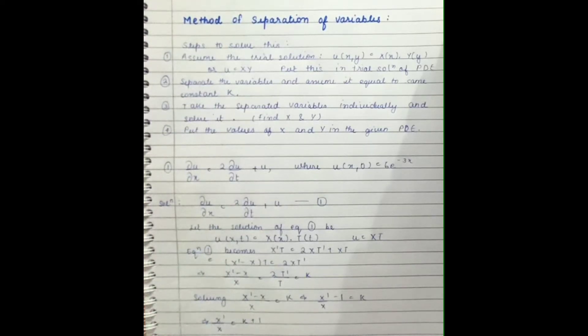We are going to learn this while seeing the steps as well as solving the question. The question here is ∂u/∂x = 2∂u/∂t + u, where u is a function of x comma 0 equal to 6e^(-3x).